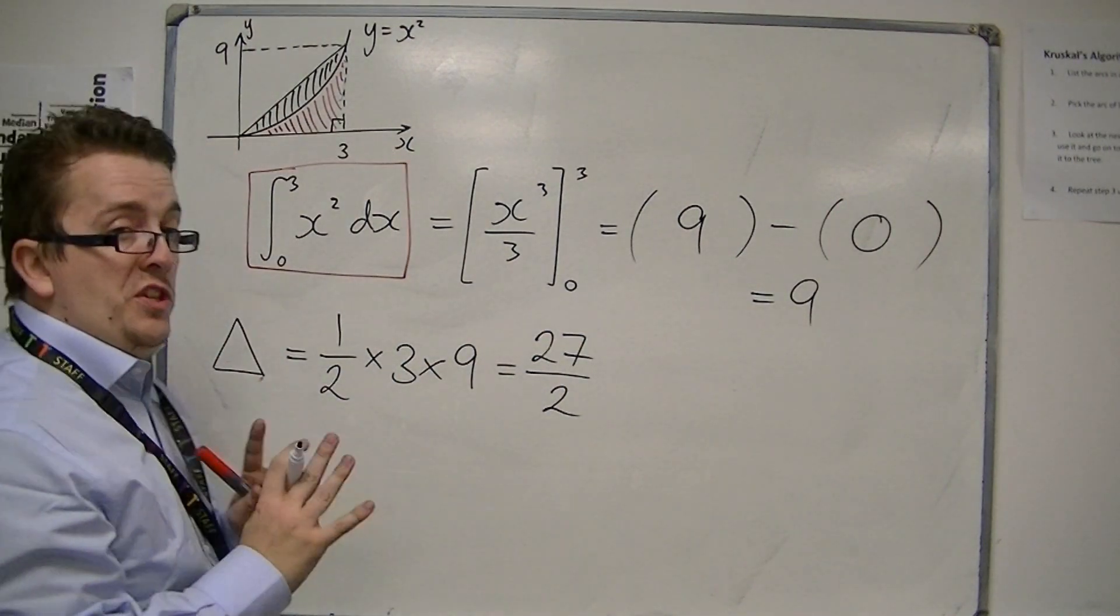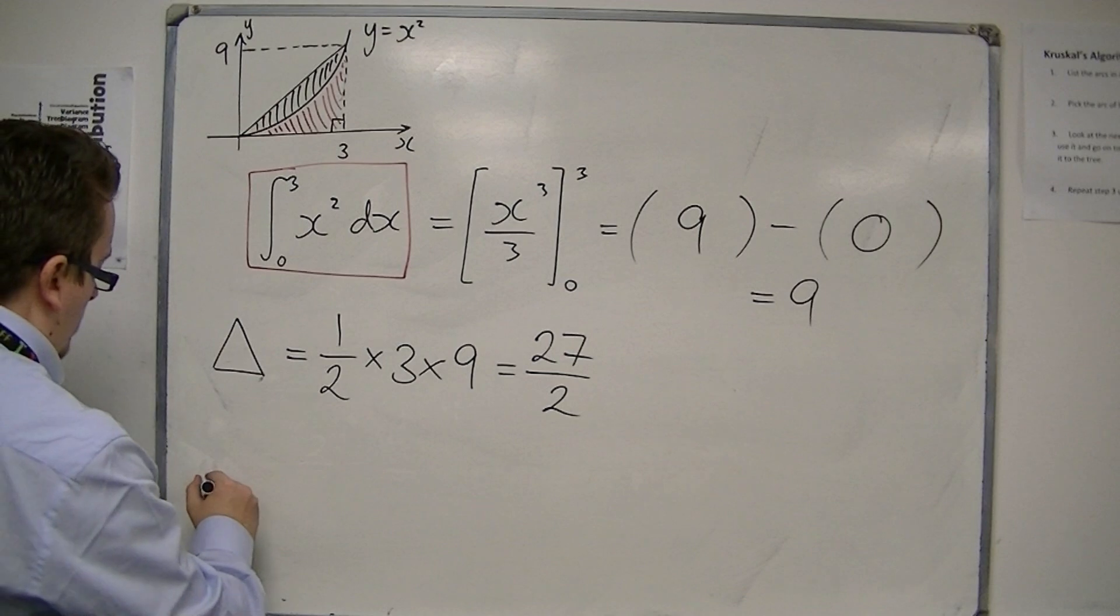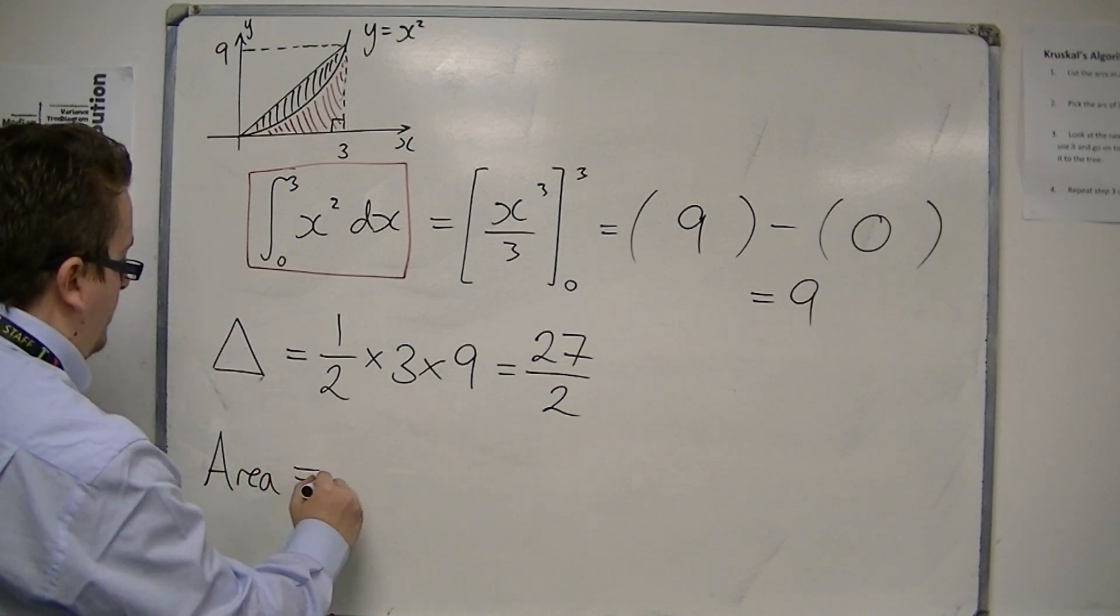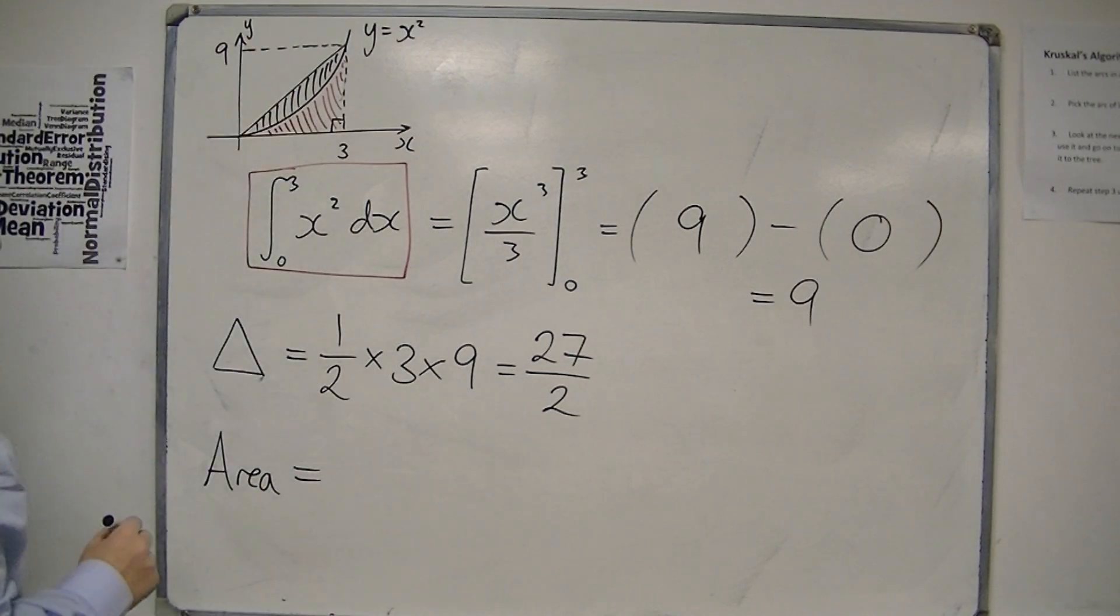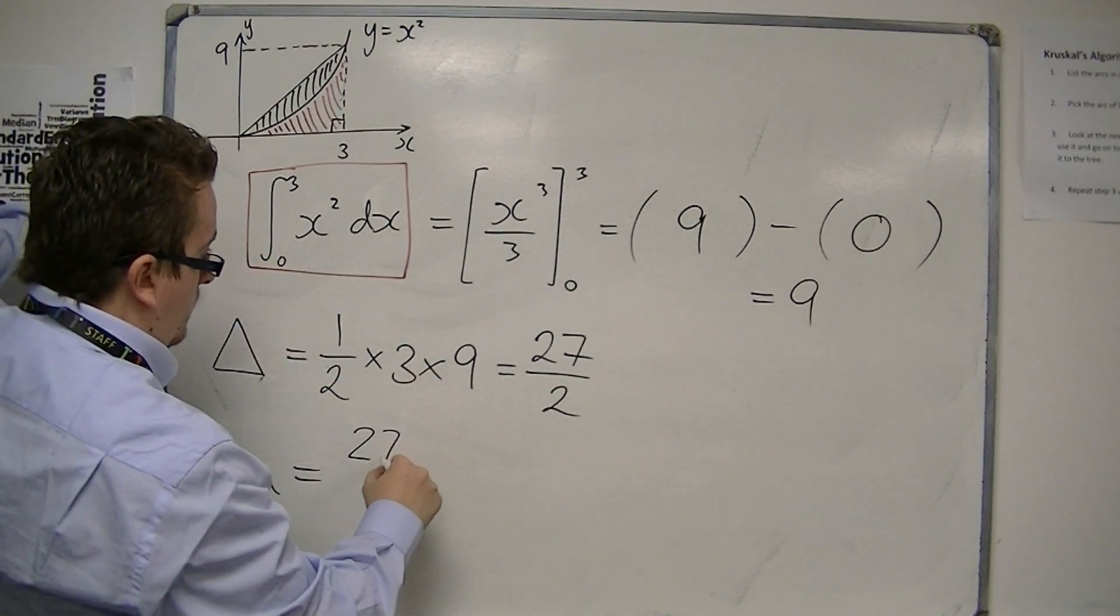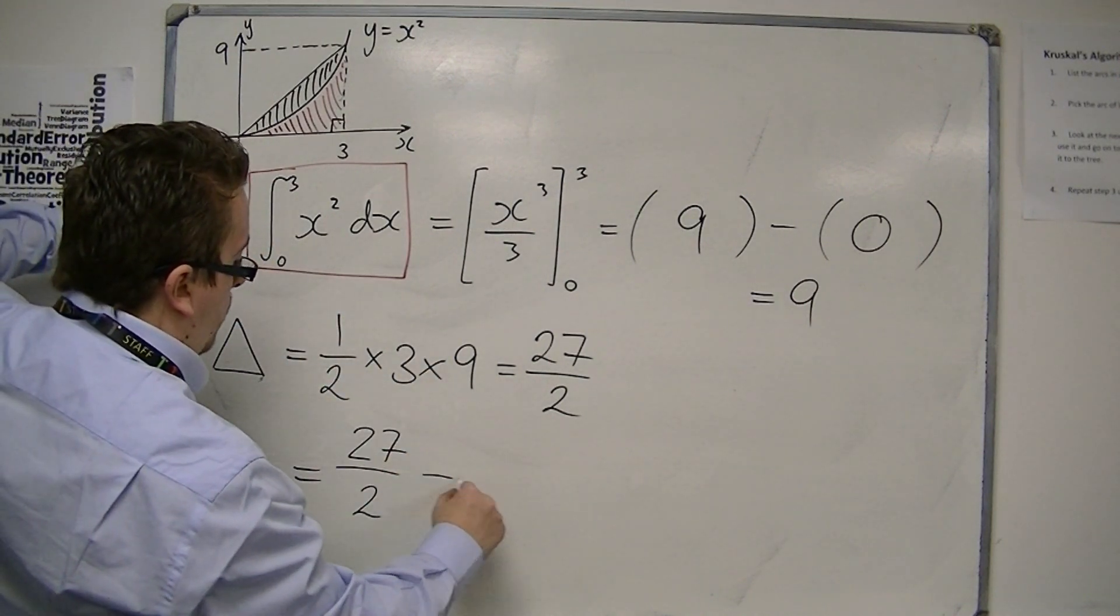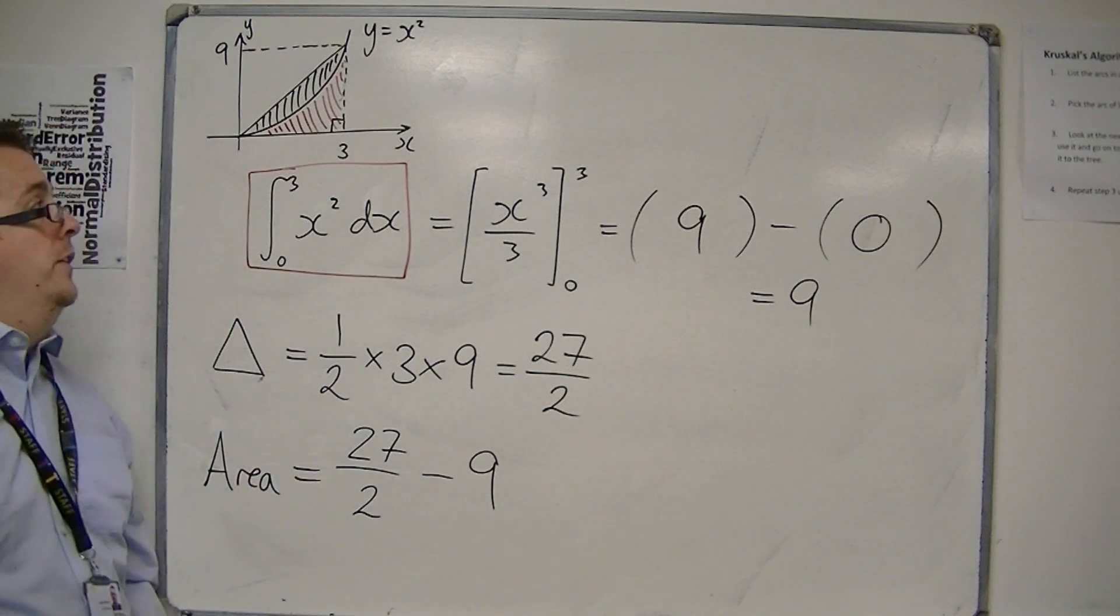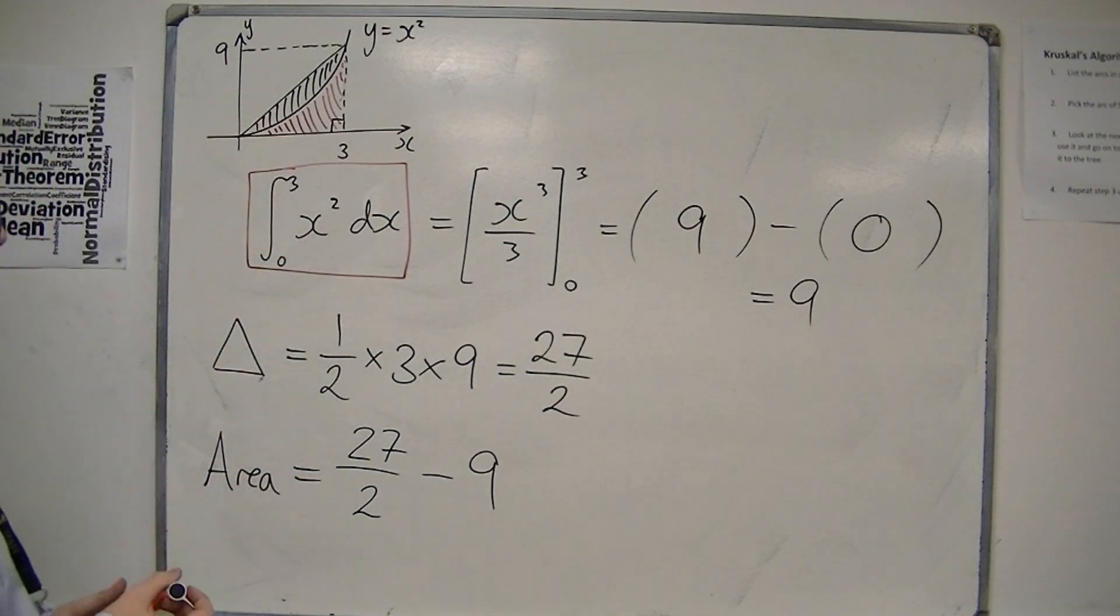So, the total area that I want, the area of the black region, is the area of the triangle, take away the area under the curve. So, take away the red area.